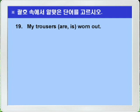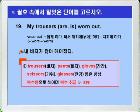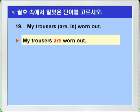Question 19: 'My trousers are/is worn out.' Words like trousers, pants, gloves, scissors, and glasses represent items that come in pairs and only function as a pair, so they are always used in plural form and take plural agreement. Therefore 'are' is the answer. Answer: My trousers are worn out.